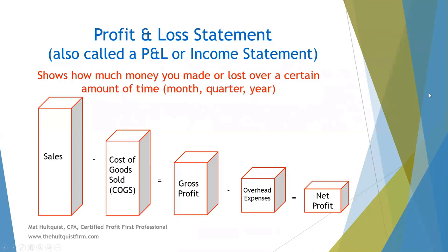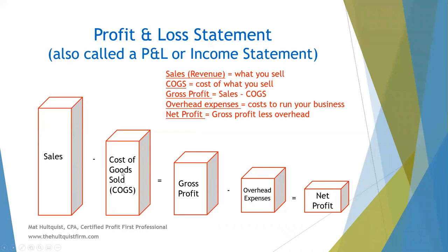In this graphic, we start with sales — what you sell to your customers. This is revenue, income, sales — money that you've earned from customers. You subtract your cost of goods sold, which is the cost of what you sell. For example, if you buy something for $4 and sell it for $10, your sales are $10 and your cost of goods sold is $4. The difference between the two is called gross profit — $6 in that simple example. Then you have your overhead expenses, which are all the costs to run your business that are not cost of goods sold — things like rent, utilities. When you subtract that, you get your net profit or loss.